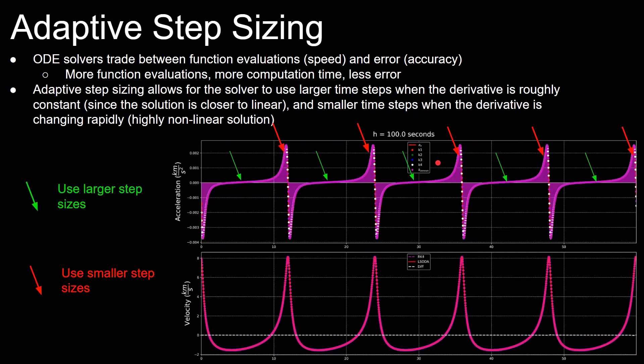And this adapted step sizing method is why you'll see when a solver errors, the message will say step size becomes too small. Because even with a step size near machine epsilon, which is a floating point limit of your computer, the solver can't achieve its tolerance constraints.